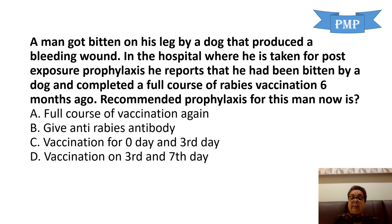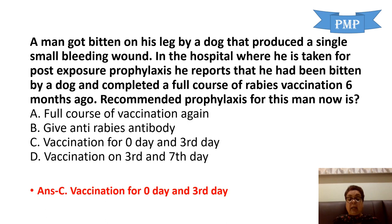A man got bitten on his leg by a dog, producing a bleeding wound. At the hospital for post-exposure prophylaxis, he reports completing a full course of rabies vaccination six months ago. The bleeding wound makes this category 3 exposure. Since he received post-exposure prophylaxis six months ago, the recommended prophylaxis is option C: rabies vaccine on day 0 and on day 3.